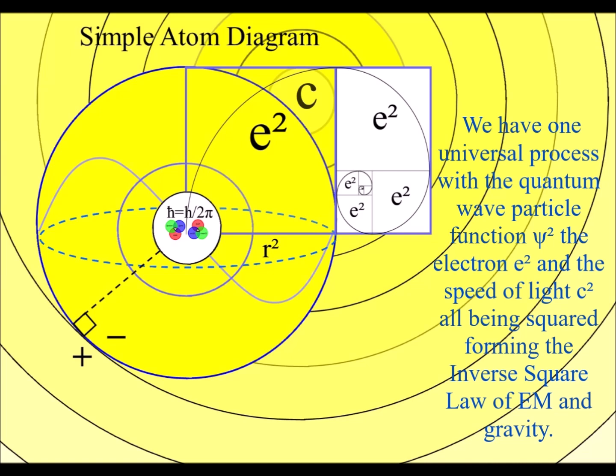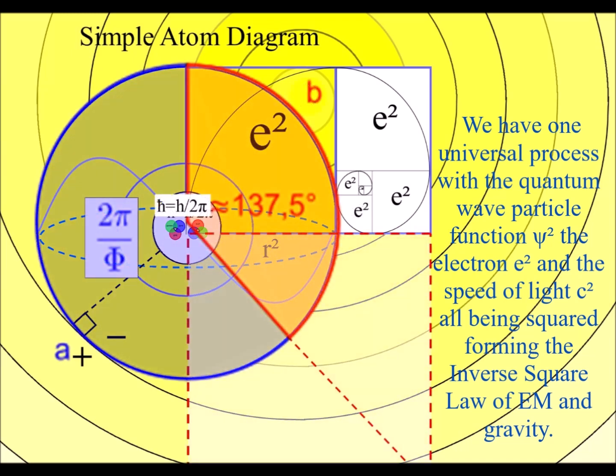The energy levels cascade down relative to the golden ratio forming the Fibonacci spiral and golden angle 137.5.